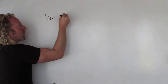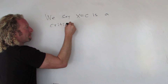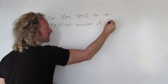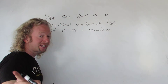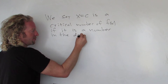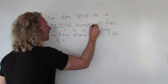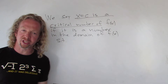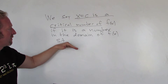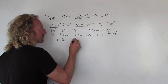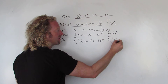So we say x equals c is a critical number of f(x) if it is a number in the domain of f(x) such that one of two things happens: either the derivative is equal to zero at that number, or the derivative is undefined there — f prime of c is undefined.